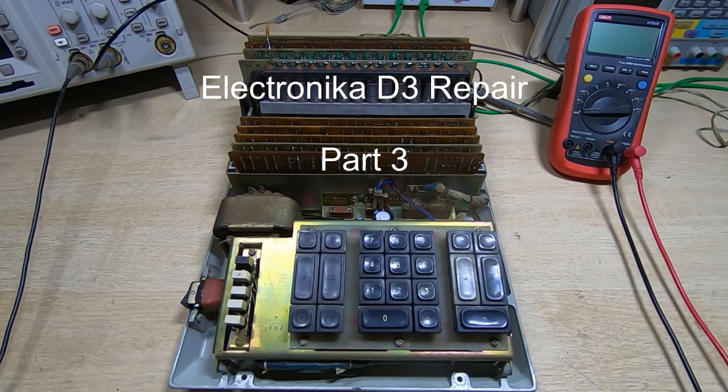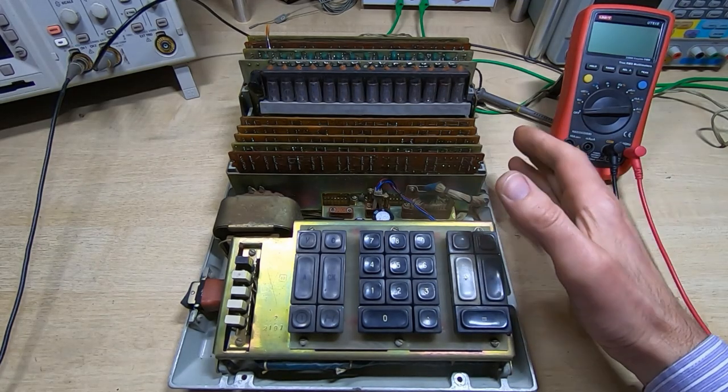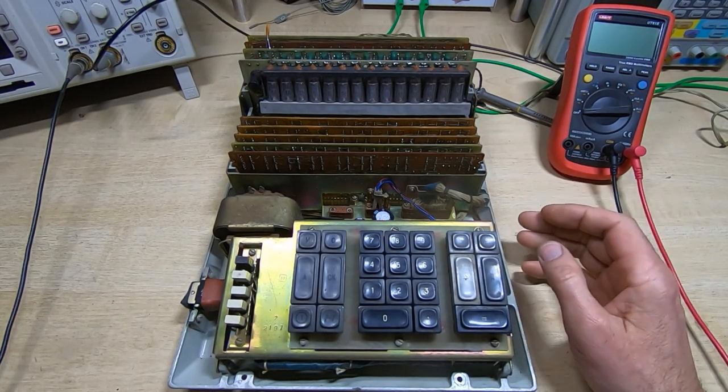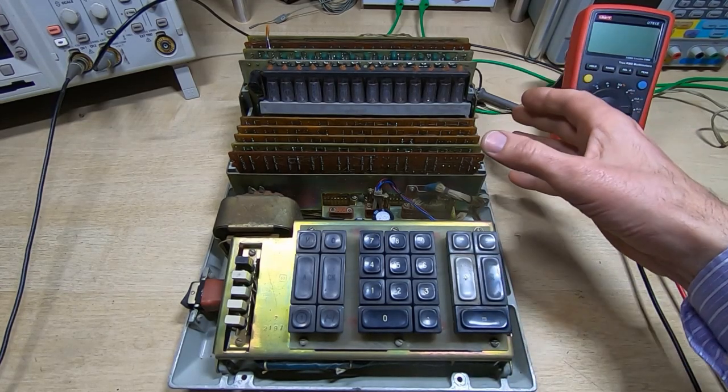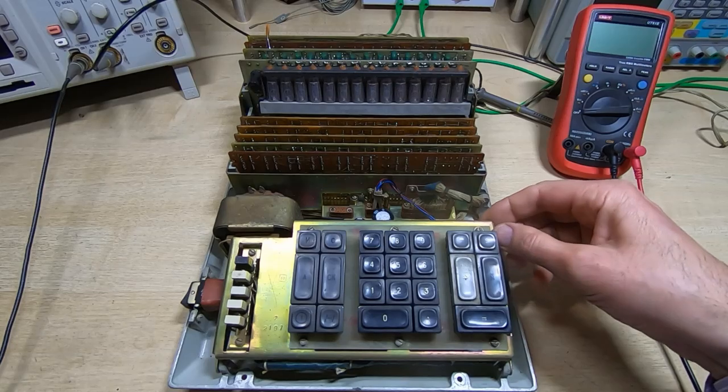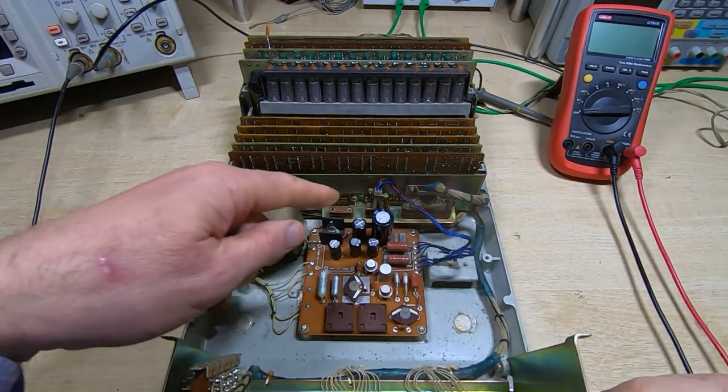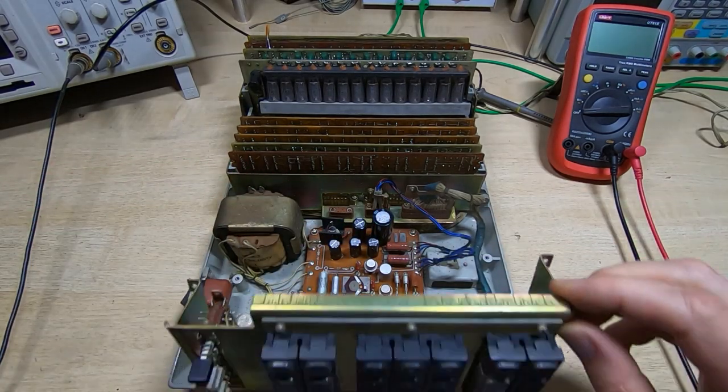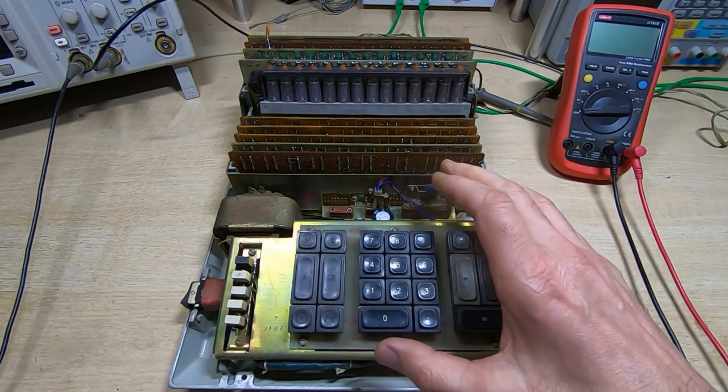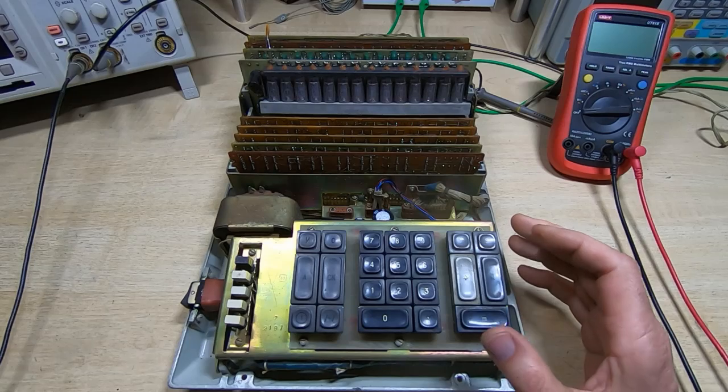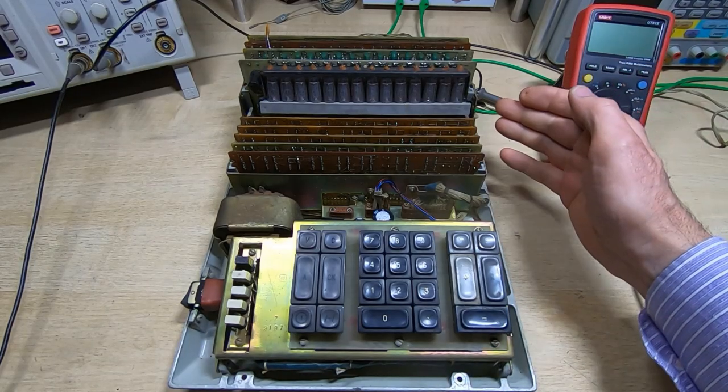In this series of videos I'm attempting to repair this Electronica D3 nixie tube calculator. In the previous videos I've dismantled the unit, and in the last video I replaced the capacitors in the power supply, tested that, the voltages need adjusting a little bit, and then we pulled all the boards and had a look at those.